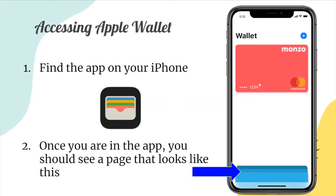So how can you access Apple Wallet? First, you have to find the Apple Wallet app on your iPhone. The icon looks something like this. And if you have iOS 15 or higher, it should be automatically installed. If it's not, you can always find it in the App Store. Once you've opened the app, you should see a page like the image on the right. It won't have any cards when you first download it, and you'll be able to add some, which we'll cover later in the presentation.